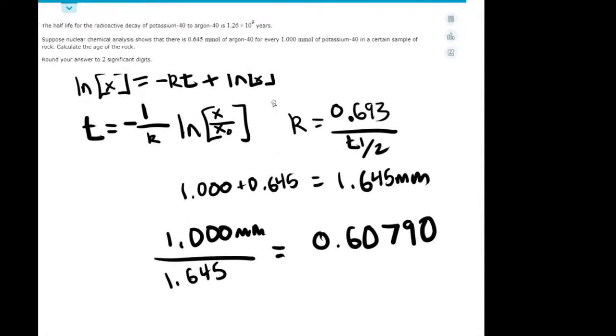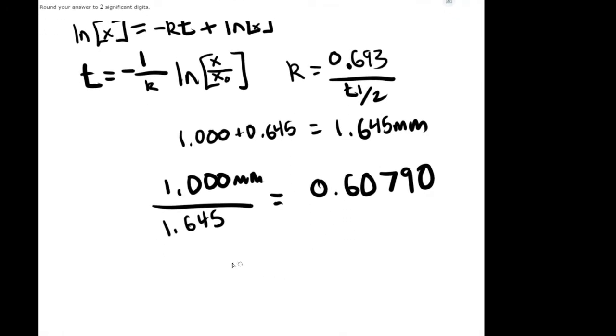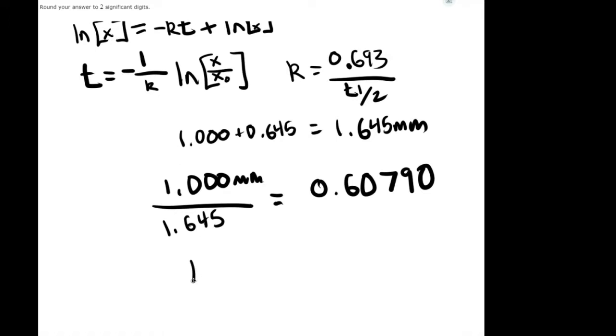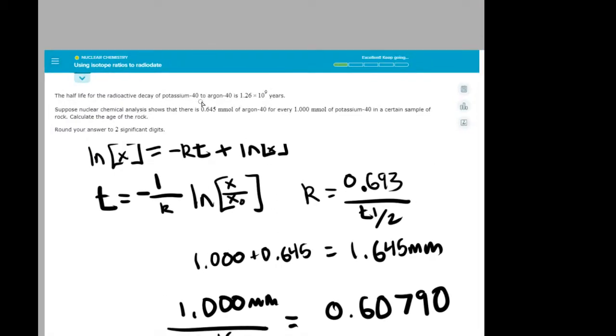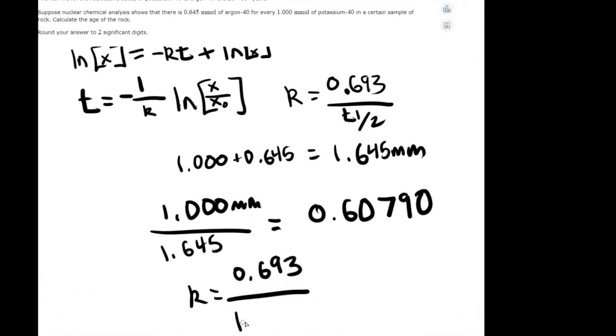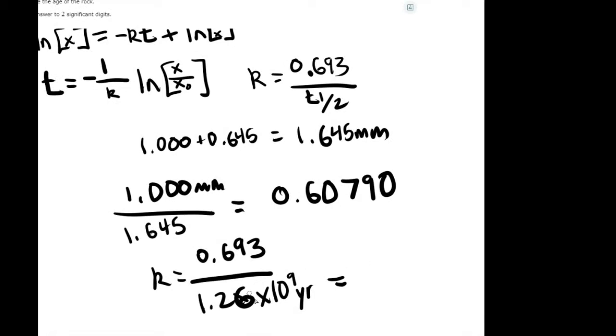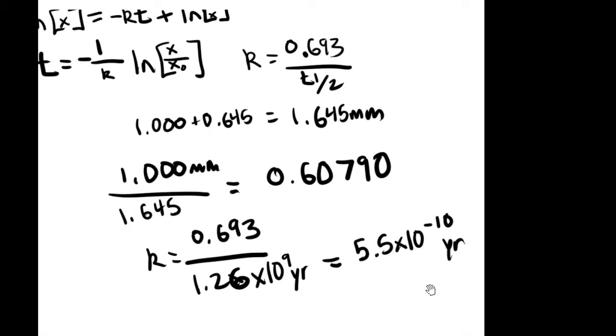So we have the ln numbers right here now. So now we solve for K. K equals 0.693 divided by the half-life, which is 1.26 times 10 to the 9 years. You divide it and it equals 5.5 times 10 to the negative 10 per year.